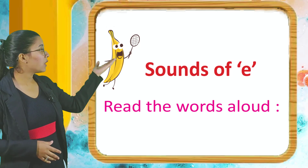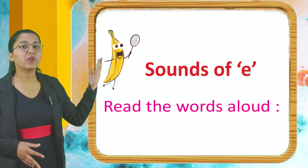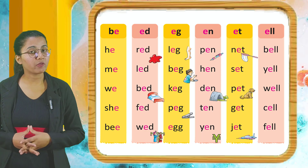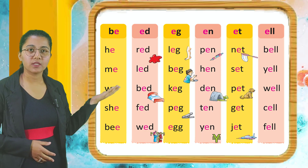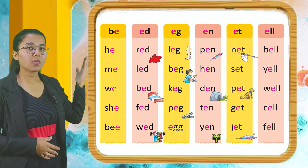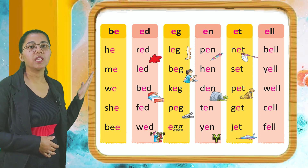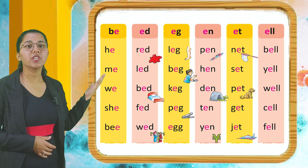Let's read sounds of E. You have to read these words aloud. So let's read: be, he, me, we, she.